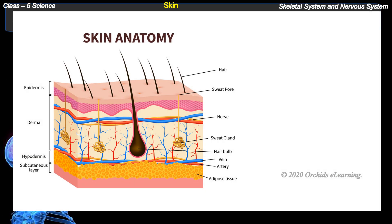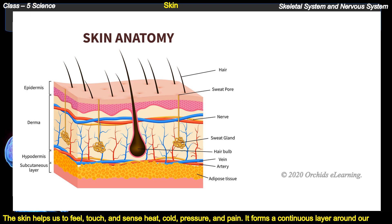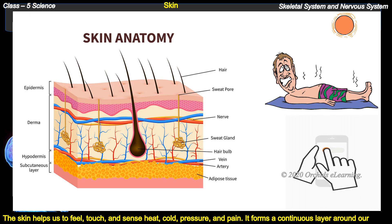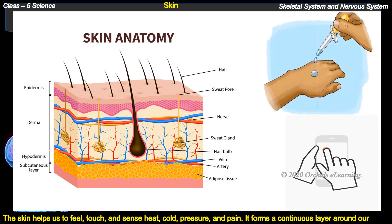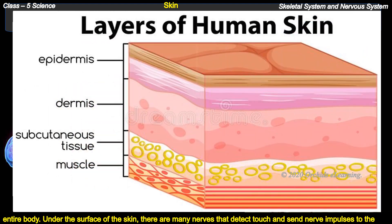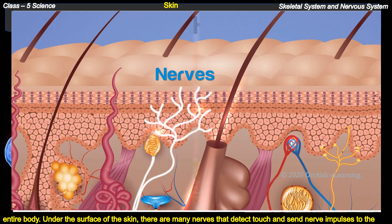The skin helps us to feel touch and sense heat, cold, pressure, and pain. It forms a continuous layer around our entire body. Under the surface of the skin there are many nerves that detect touch and send nerve impulses to the brain.